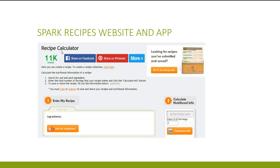Here's how the recipe calculator works. First, you want to click on the section called Add Calculate Recipe, which is found on the home page. Next, take your homemade recipe and you can enter each individual ingredient under Enter My Recipe. For example, maybe you have a homemade banana bread and you want to enter each ingredient for that specific recipe. Once you have entered all of the ingredients and amounts, then you want to go over and enter the number of servings that you plan to make under the Calculate Nutrition Information.